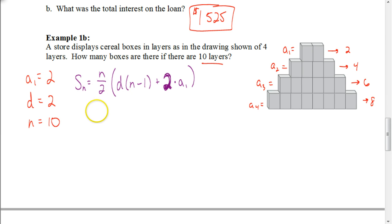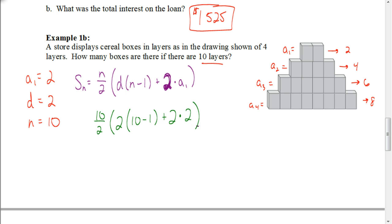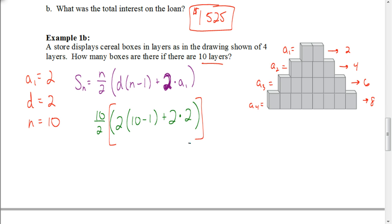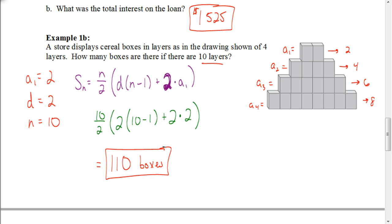Plugging in: n is ten, so it's ten divided by two, times the constant difference two, times ten minus one, plus two times the first term two. Make sure you use parentheses in your calculator — if you simplify to five times two times nine plus four without parentheses, the calculator will follow order of operations incorrectly. You want to ensure the calculator does the inner part first then multiplies by five. The answer works out to one hundred ten boxes — meaning you would need a total of one hundred ten cereal boxes for the entire display.